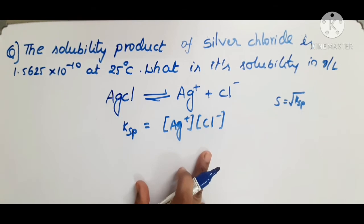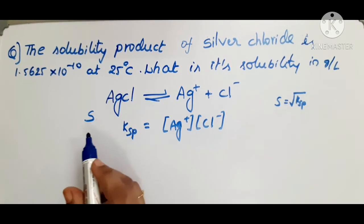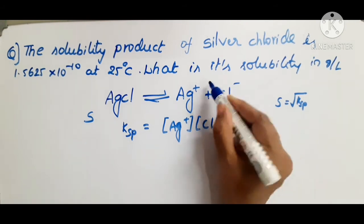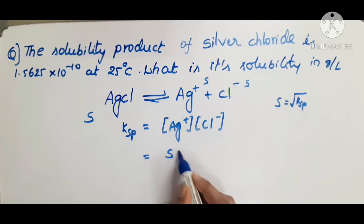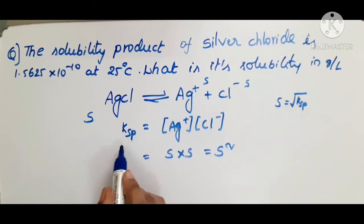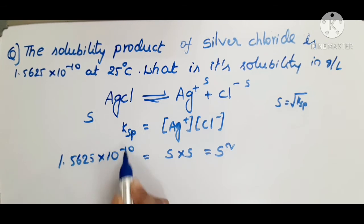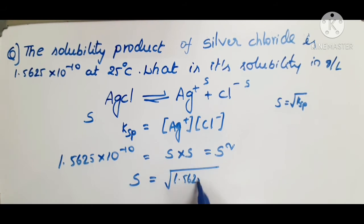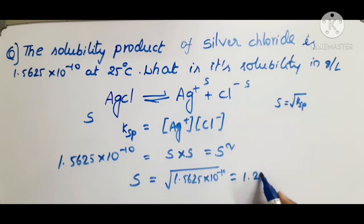If the solubility is S, then S moles will dissolve. Here [Ag⁺] = S and [Cl⁻] = S. So Ksp = S × S = S². The Ksp value given is 1.5625 × 10⁻¹⁰.